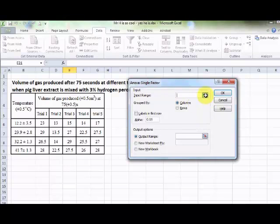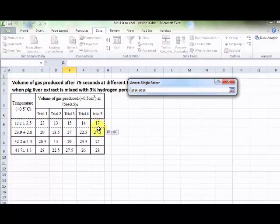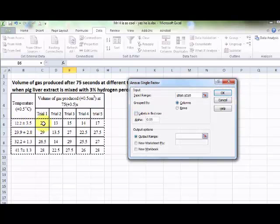Now, our input range. Our data. We want the temperatures and the data. Done. Now, our temperature is actually in different rows. Okay, labels in the first row. By default, we want to be 95% sure, so 0.05.